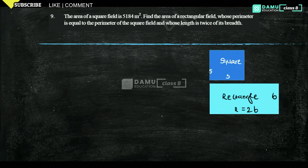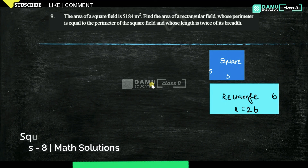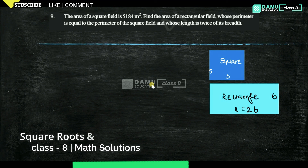Hello viewers, thanks for watching our videos. If not yet subscribed, please subscribe and click the bell icon. So in this module we are going to discuss: the area of a square field is 5184 square metres. Find the area of the rectangular field whose perimeter is equal to the perimeter of the square field and whose length is twice its breadth.